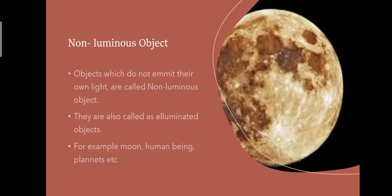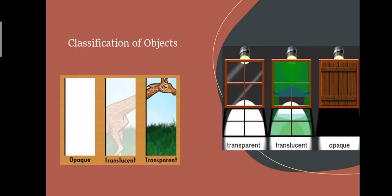Never be confused — the moon does not emit its own light. The moon and planets shine because sunlight reflects on their surface; they are also called illuminated objects. Now, on the basis of allowing light to pass, objects are divided into three categories: opaque, translucent, and transparent.